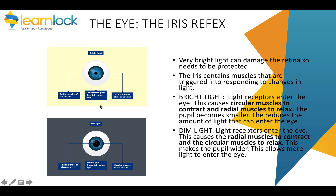When it's dark or in dim light, the radial muscles in the iris contract and the circular muscles in the iris relax. This makes the pupil wider — it dilates — allowing more light to enter the eye when it's darker. Again, this is a reflex because it's automatic.